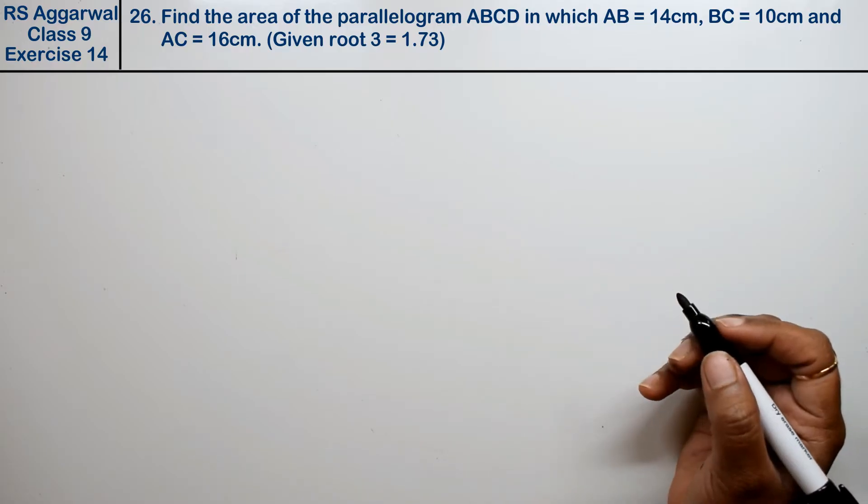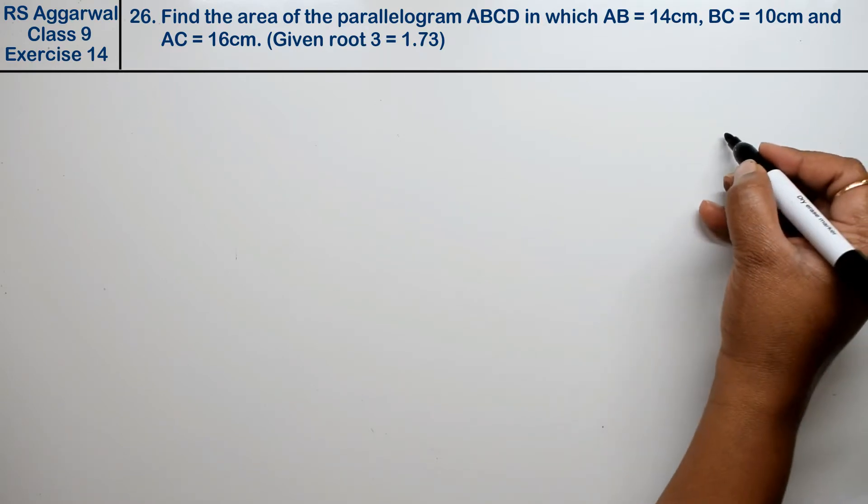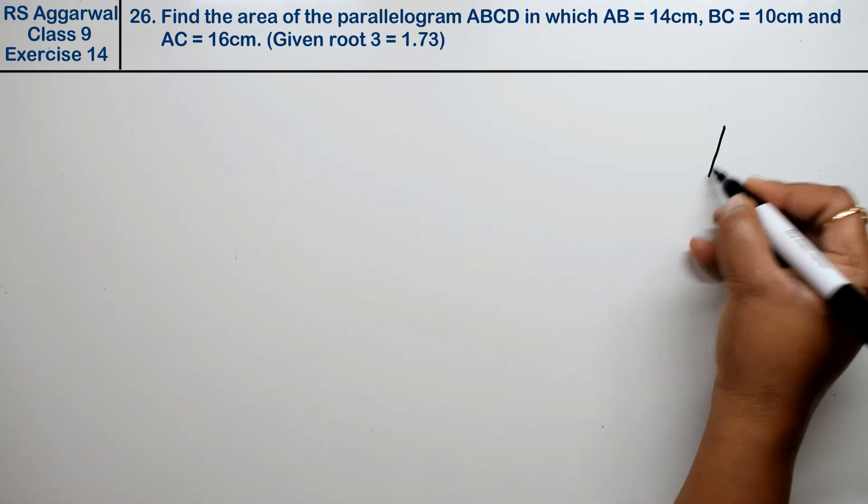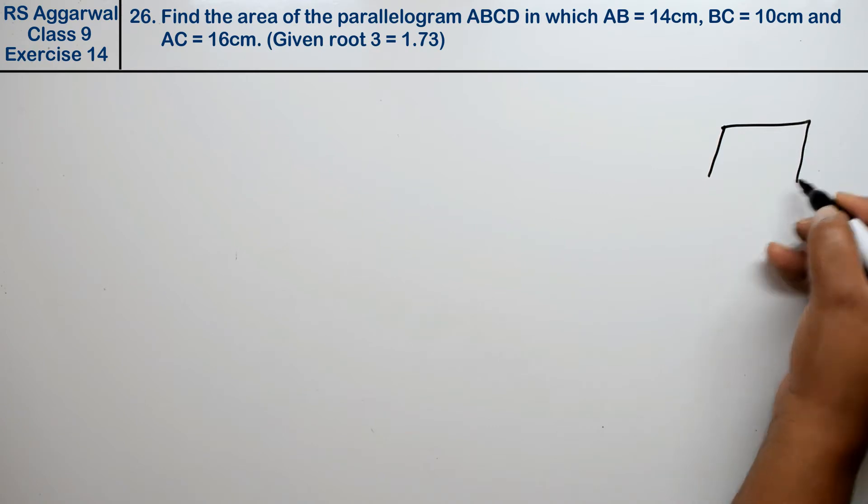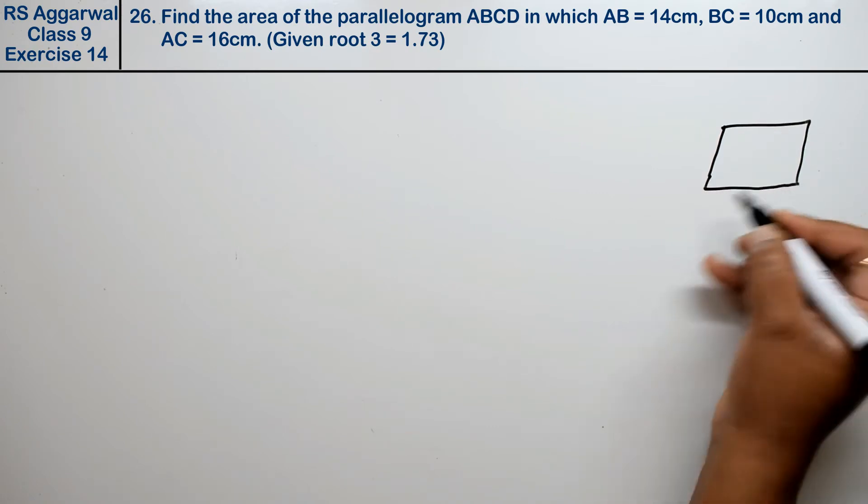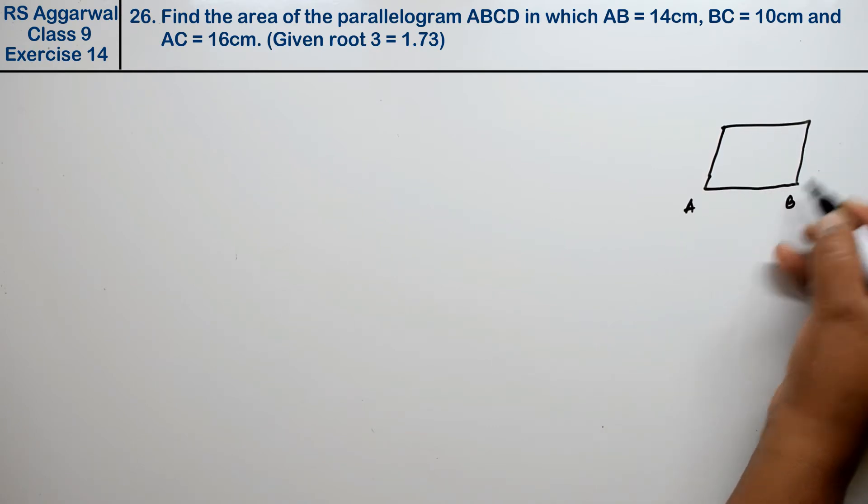Let's do question number 26 of exercise 14, that is area of triangles and quadrilaterals. Question number 26 is find the area of parallelogram ABCD. We have a figure of a parallelogram, A, B, C, and D.